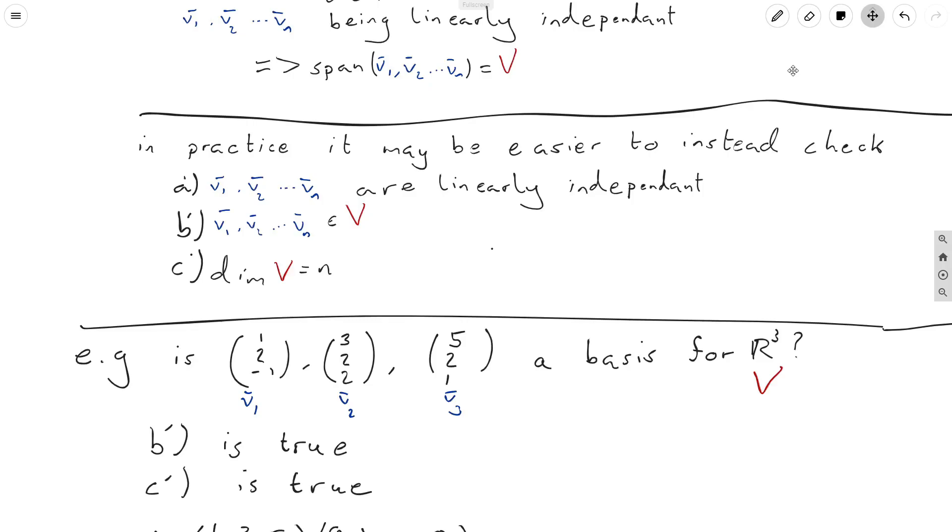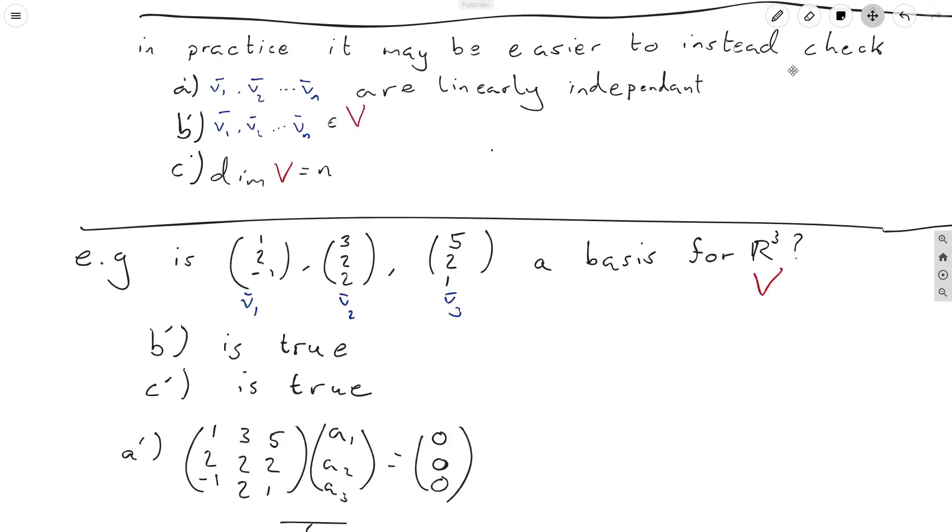We've already talked about how to check if a bunch of vectors are linearly independent. We just set up this equation. We set up the matrix, which has columns, the three vectors we're interested in, (1, 2, -1), (3, 2, 2), and (5, 2, 1). Apply it to the vector (a1, a2, a3), and set it equal to 0. And we want to see that our only solutions are a1 = a2 = a3 = 0. And that will tell us that our vectors are linearly independent.